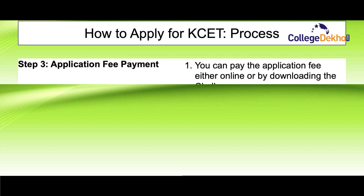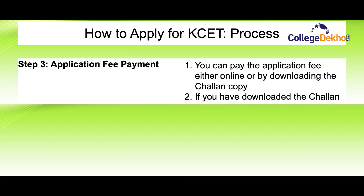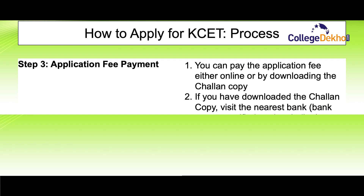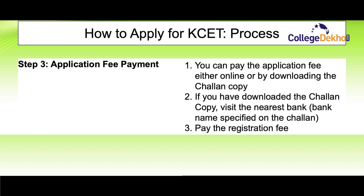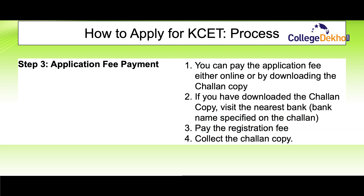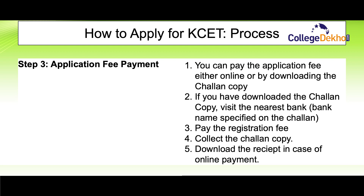The third step is to pay the application fee. You can pay either online or by downloading the challan copy. If you have downloaded the challan copy, you can visit your nearest bank as specified on the challan, pay the registration fee, and collect the challan copy. If you are paying online, also remember to download the receipt when the application fee is successfully submitted.